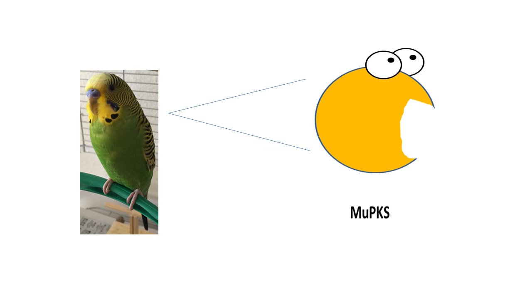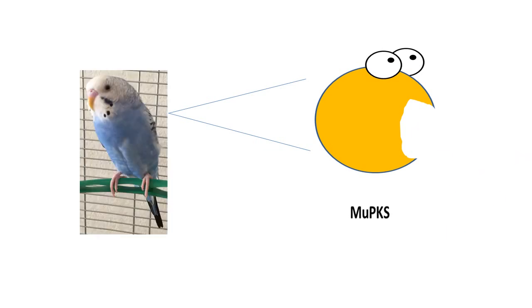The enzyme responsible for making the pigment is called MU-PKS. Just one amino acid change inactivates MU-PKS, making the bird incapable of producing the yellow color. So Little Green is the wild type and Little Blue is a mutant, but I love them both.